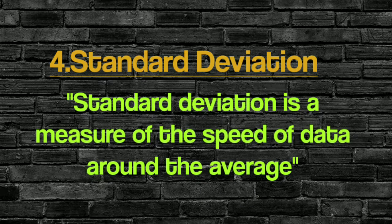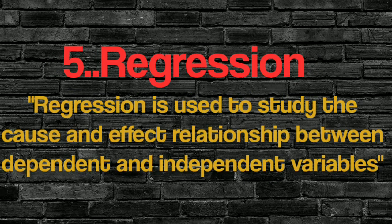The fourth one is standard deviation, which is a measure of the spread of data around the average. The fifth technique is regression. The cause and effect relationship between dependent and independent variables is known as regression.